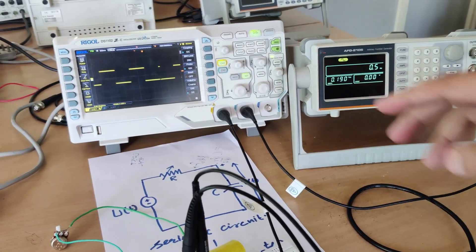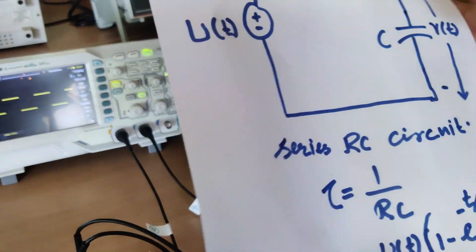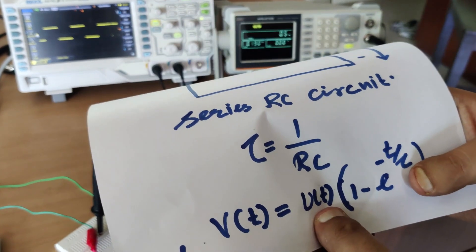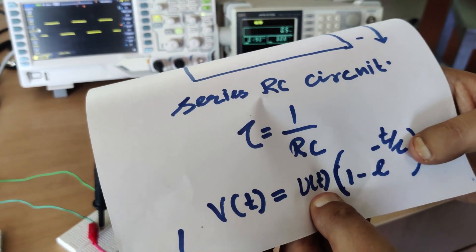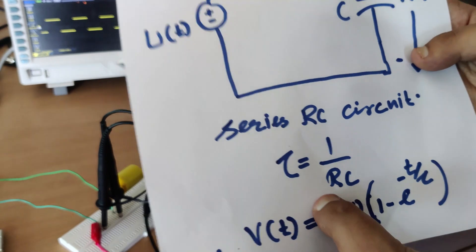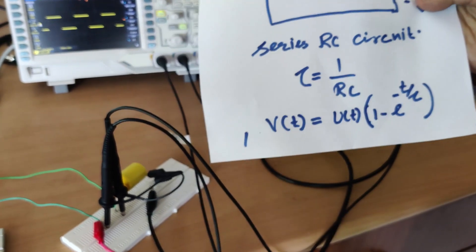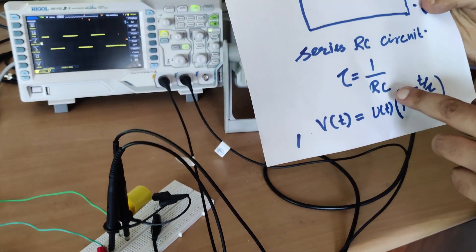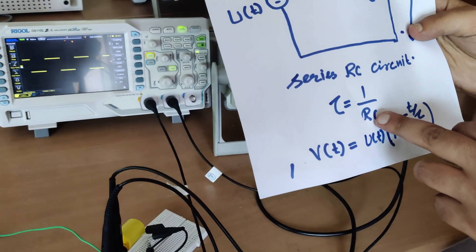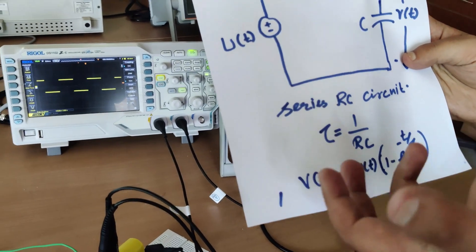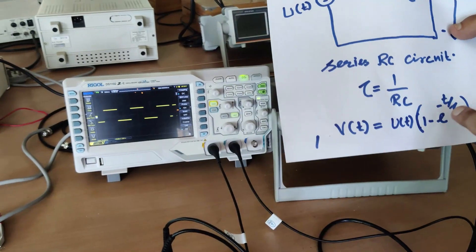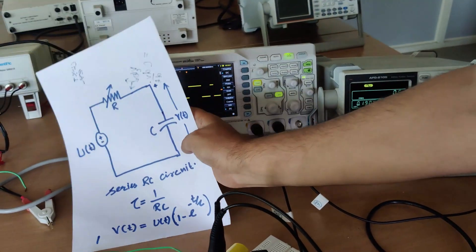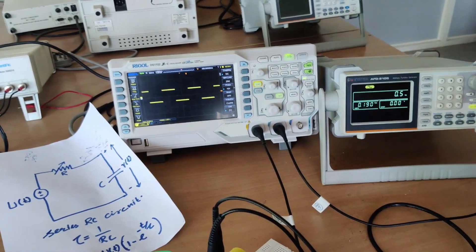The voltage across the capacitor is equal to u(t) = 1 minus e raised to the power of minus t over tau. This time constant tau is equal to RC, so it will depend on both the capacitor and the resistor. As our capacitance is fixed, we will vary the resistance and we will see this behavior come on the DSO.